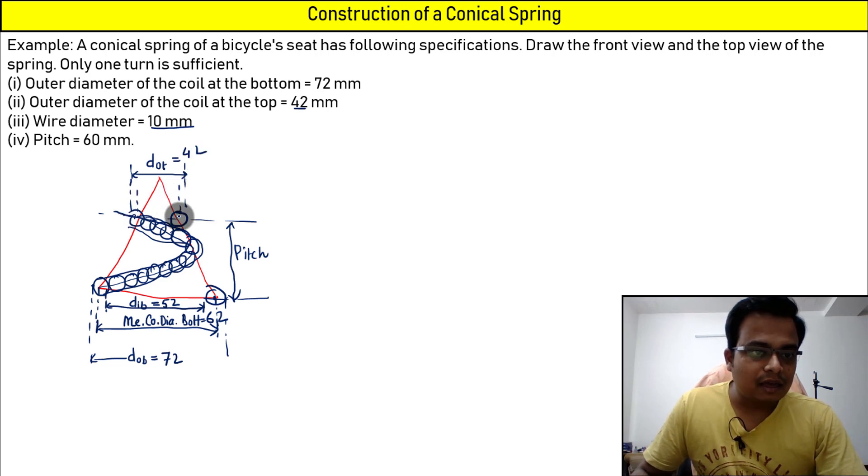Similarly, there is going to be a mean here and there is going to be an inner also. So the mean is going to be just 10 less than this, that is 32. And inner is going to be 42 minus 10 minus 10, that is 22.